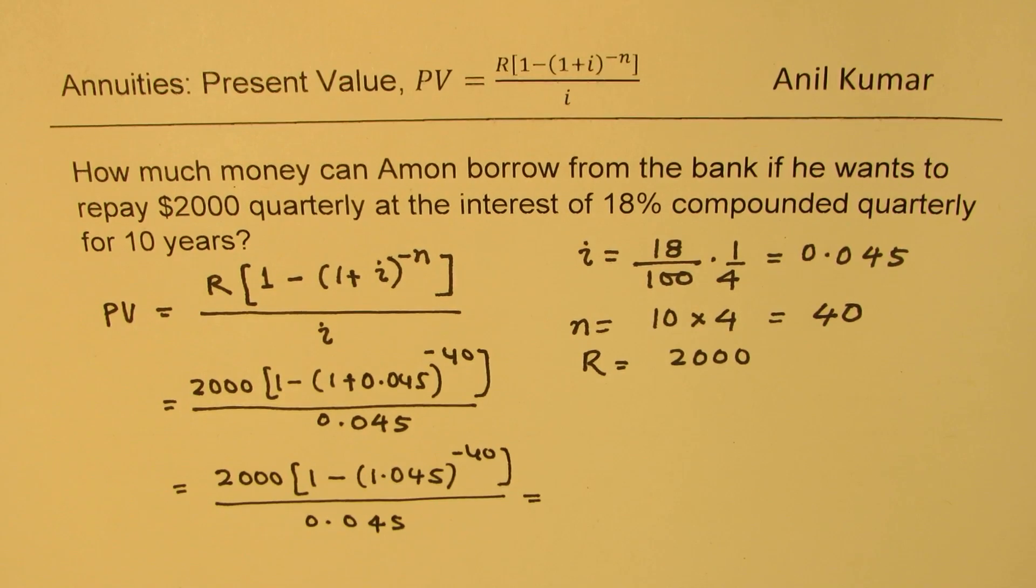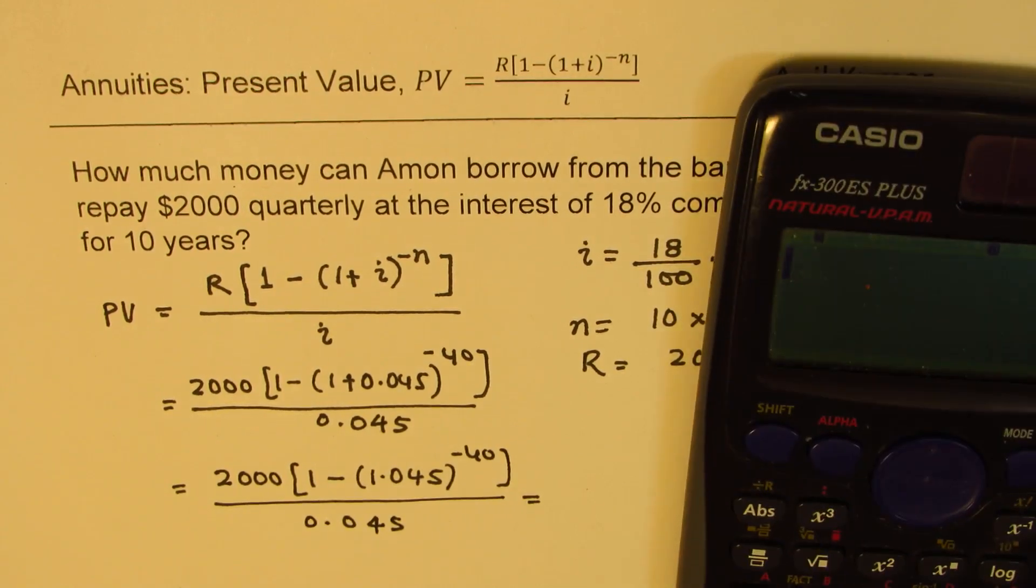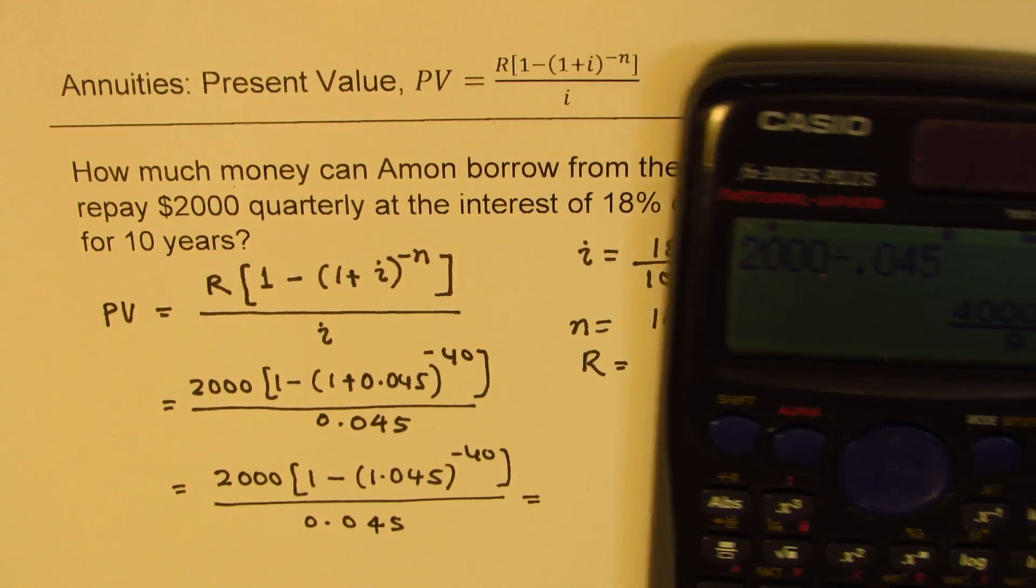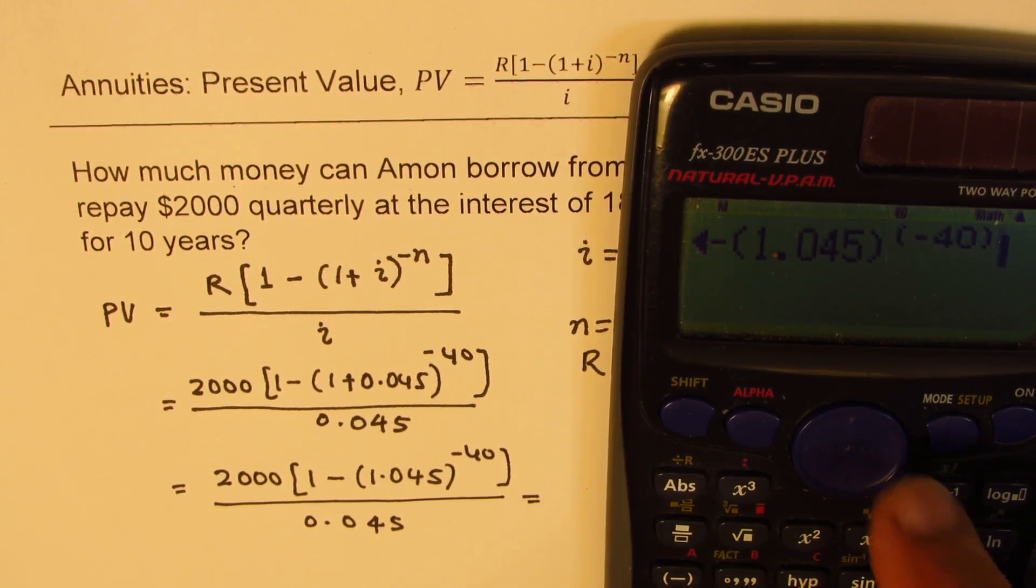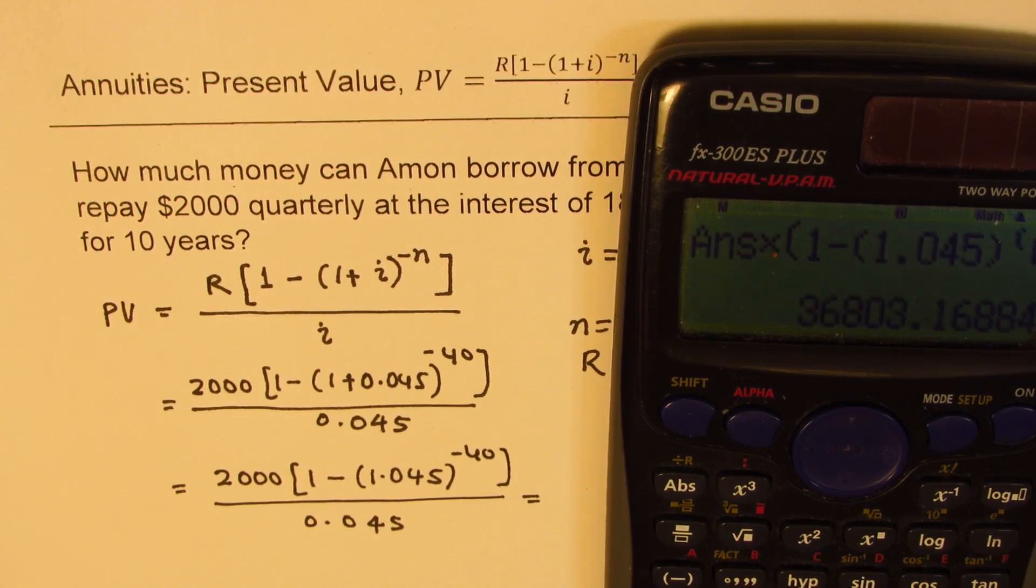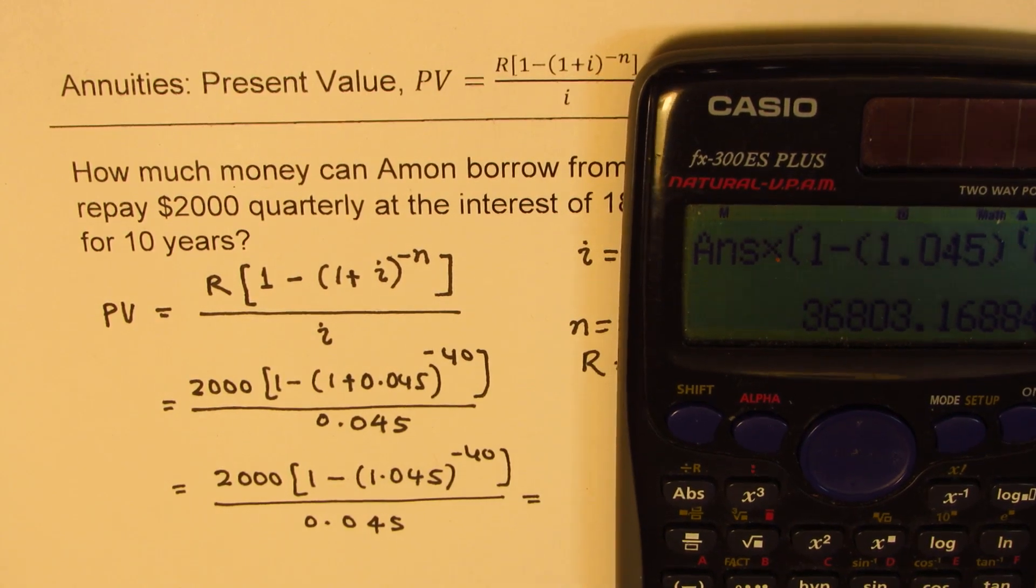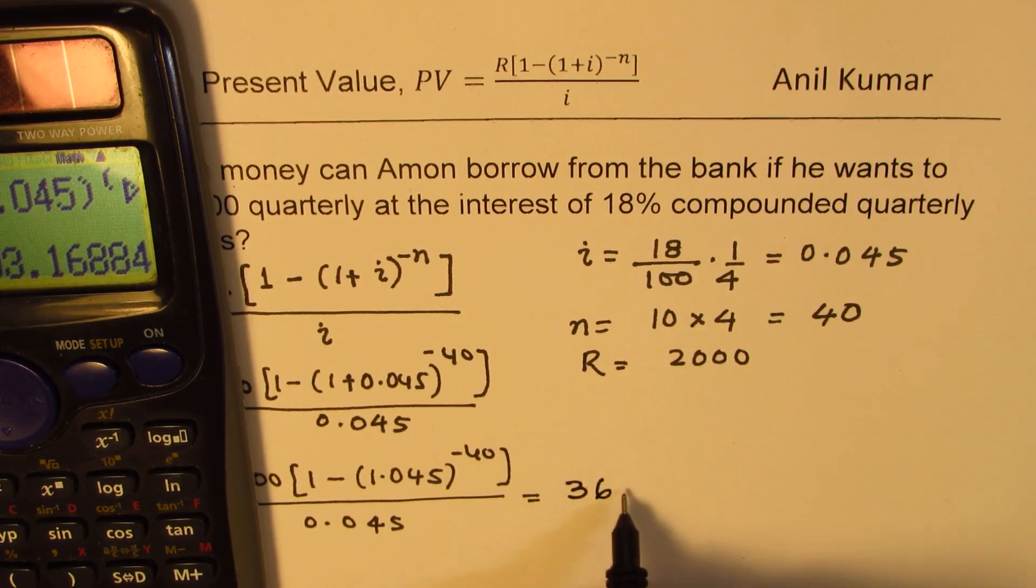Now, we can use calculator and calculate this value. So let's use the calculator to find this answer, so we have 2,000 divided by 0.045, and we are going to multiply this by 1 minus 1.045 to the power of minus 40. Let me put that also in brackets, and then we will just multiply this, and get our answer, which is 36,803.